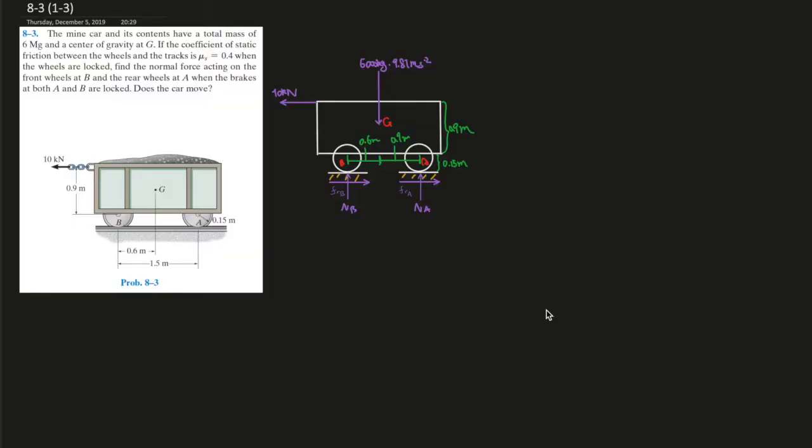The mine car and its contents have a total mass of 6 megagrams and has the center of gravity at G. If the coefficient of static friction between the wheels and the track is mu s equals 0.4 when the wheels are locked, find the normal force acting on the front wheels at B and the rear wheels at A. When the brakes at both A and B are locked, does the car move?